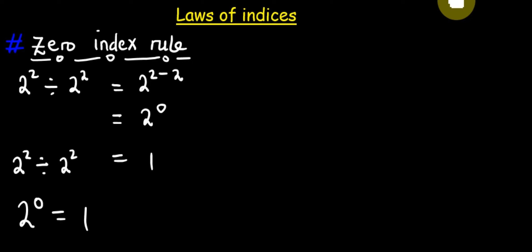Example number two: a raised to power m divided by a raised to power m. What does that mean? From indices, a raised to power m divided by a raised to power m, we maintain the base and then subtract the powers, and that is m minus m.